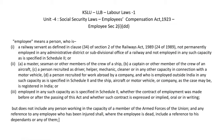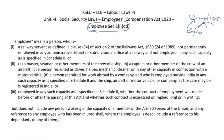Moving to the next point: who is an employee? In general terms, an employee is someone who works under an employer — there is a master and servant relationship. The employer gives employment and these persons are called employees. But according to Section 2(1)(dd) — earlier it was Section 2(1)(n), which was omitted and brought down to Section 2(1)(dd) with no major change — the definition is more specific.